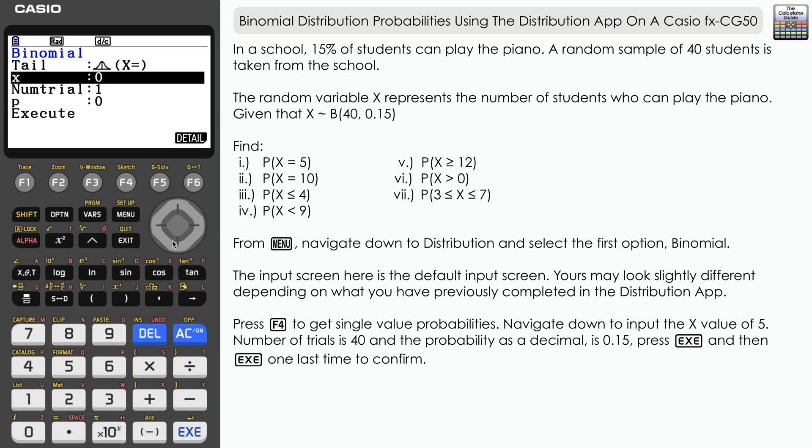We need to input the X value, that is 5 in this case. Number of trials, that is 40, and then the probability as a decimal, 0.15. Press execute and then execute one last time to confirm.